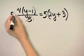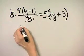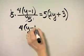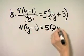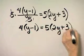Notice the 5s divide out, and I have 4 times y minus 1 equals 5 times 2y plus 3.